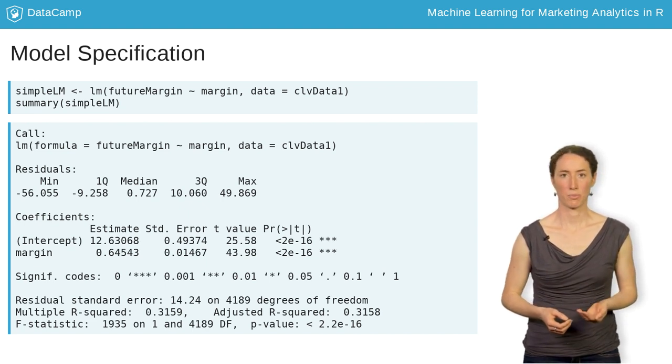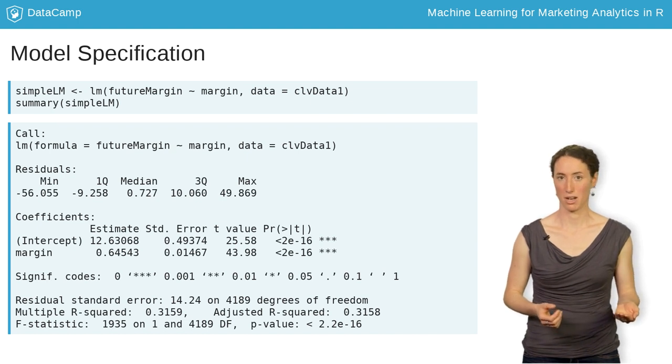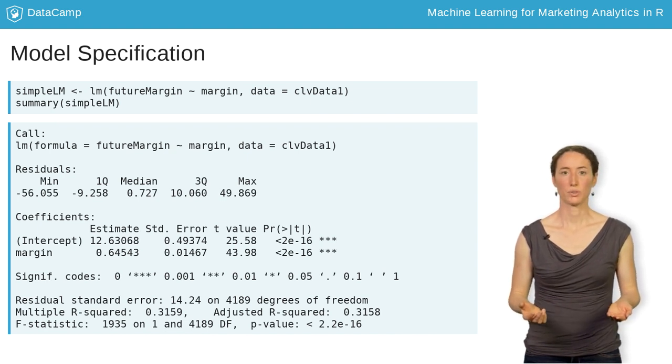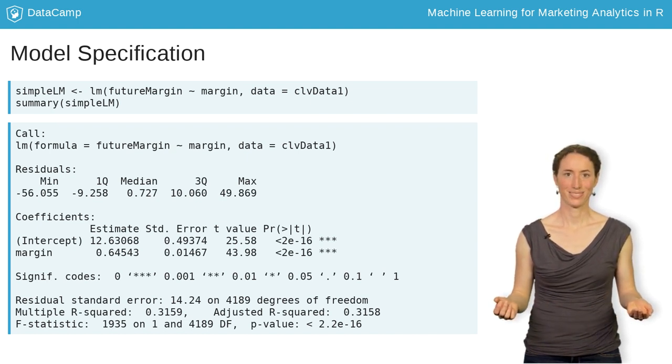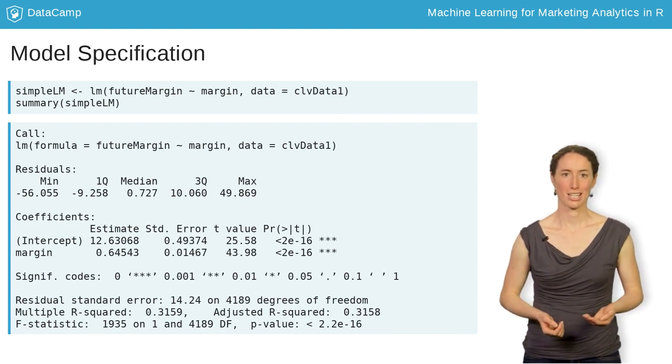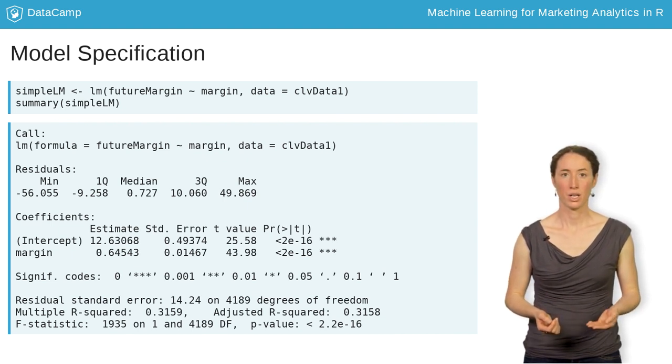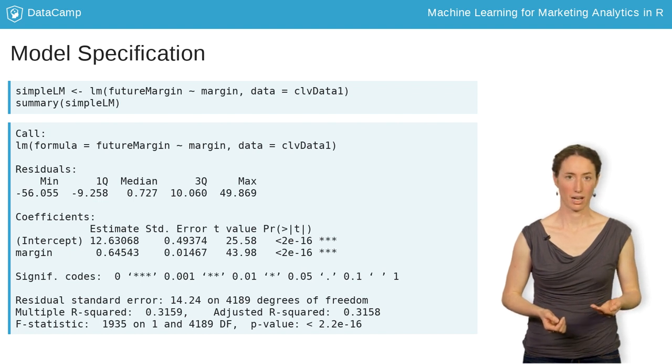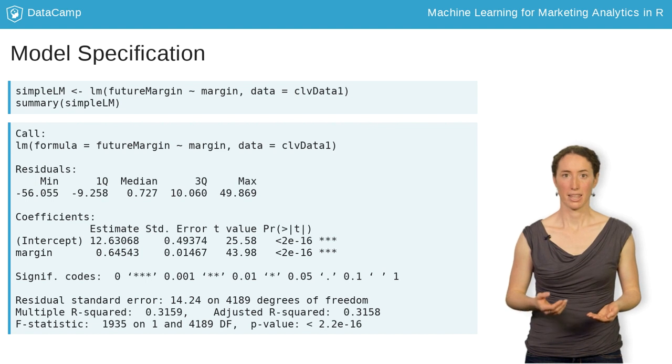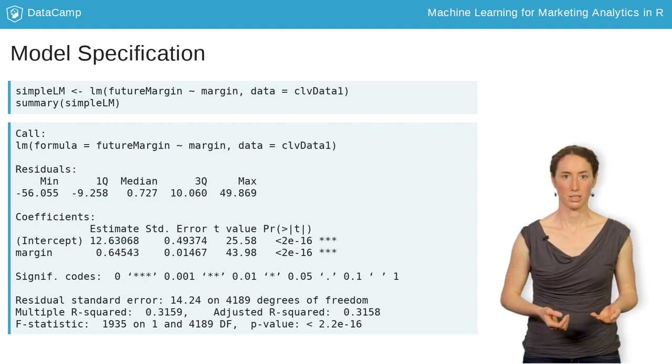Then we can use the summary function with simple lm as an argument to get an overview of the results. Take a look at the coefficient estimate for margin. With a value of roughly 0.65, it is greater than 0, which means that the higher the margin in year 1, the higher we expect the future margin to be.